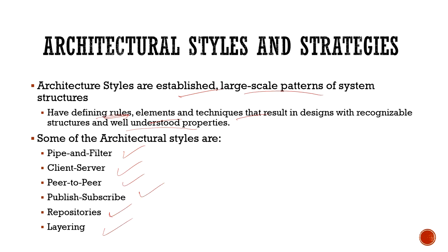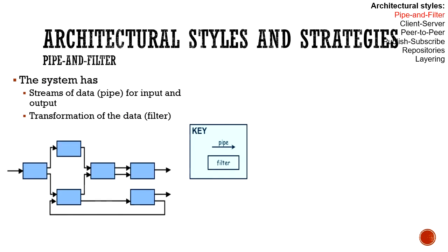Let's go through them one by one. First of all, let's talk about pipe and filter. Pipe and filter is an architectural style. We have the boxes that we call filters, and the arrows that we call pipes — hence the term pipe and filter. Pipes are used for inputs and outputs, and the filters are used for data transformation or processing.